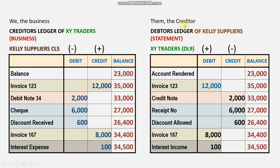On the right is the debtors ledger of Kelly Supplies — their books, which we don't have direct access to. We label this as 'statement' because what we receive from them is a copy of our account in their debtors ledger. In their books, XY Traders is a debtor. The information should be a mirror image — they do the opposite of what we do.